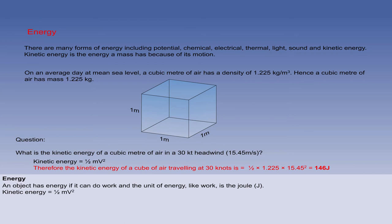Therefore, a cube of air travelling at 30 knots, which is 15.45 metres per second, has 146 joules of energy.